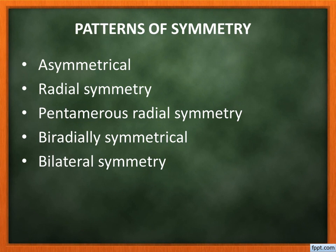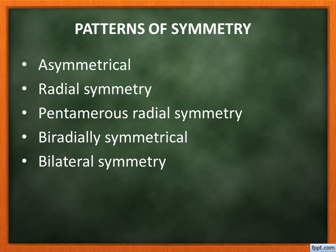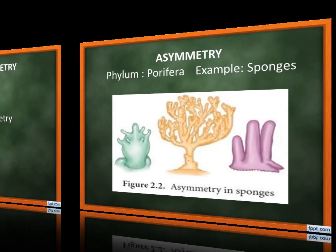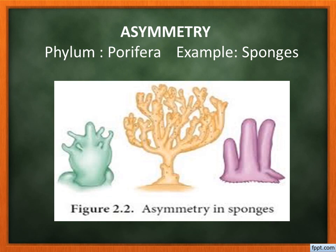The next basis is patterns of symmetry. Symmetry means we can obtain two equal halves of an organism when we cut it. For example, cutting a butterfly along the central axis gives two equal halves. As per this body arrangement, organisms are classified. The types of symmetry are: asymmetrical, radial symmetry, pentamerous radial symmetry, biradial symmetry, and bilateral symmetry.